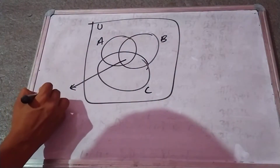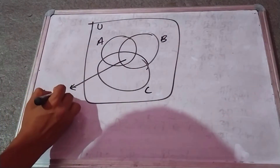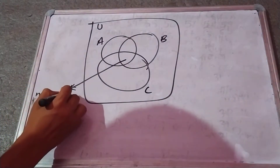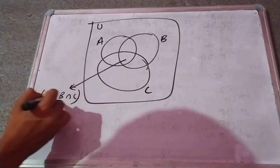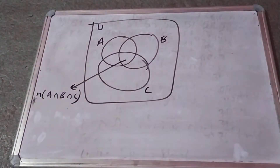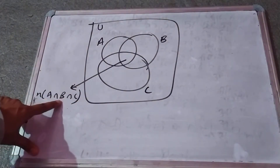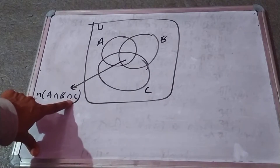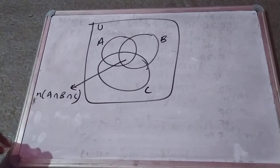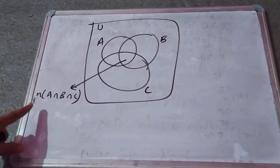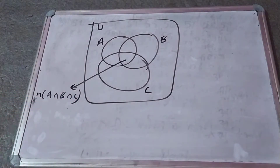We are able to solve the A intersection B intersection C. This is common. A and C is also common. The three common parts are common. We are able to solve the A intersection B intersection C first.